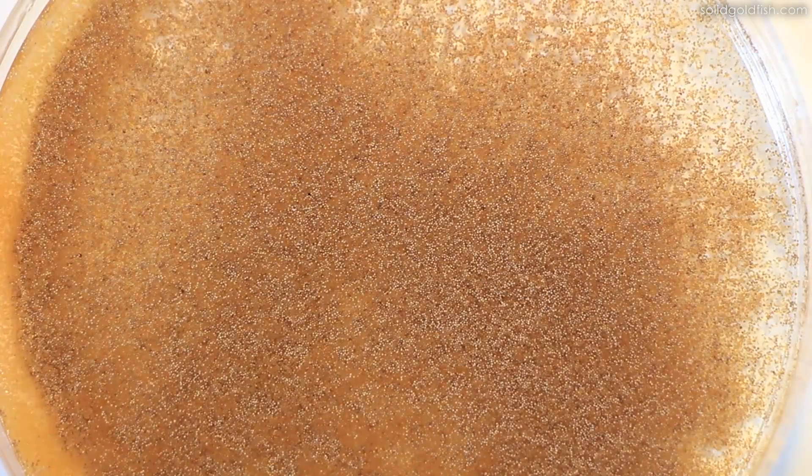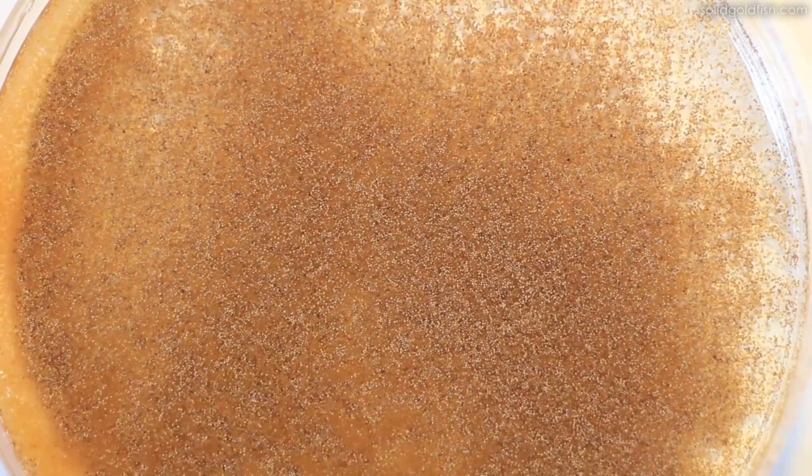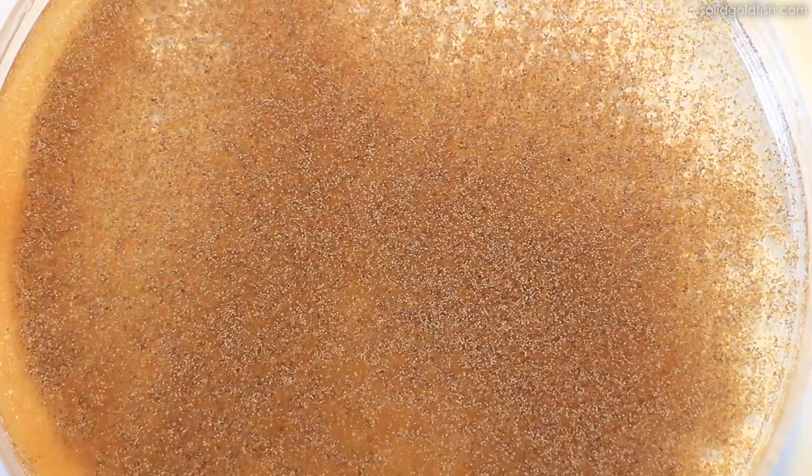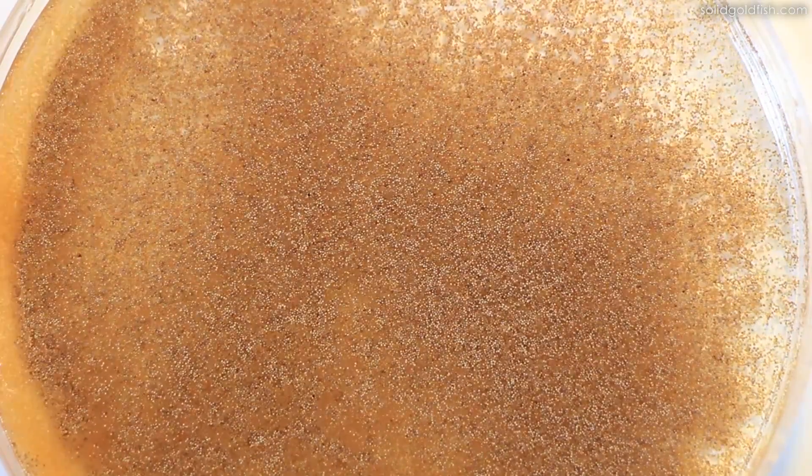It's a good idea to start a second batch 12 hours after the first one so the fry can have a new meal every 12 hours or so. You actually may need to create two brine shrimp hatcheries so you can be alternating them every 12 hours.